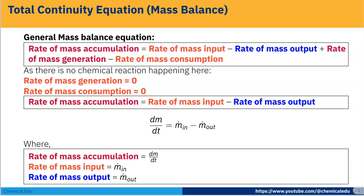First we write the general mass balance equation. Rate of mass accumulation equals rate of mass input minus rate of mass output plus rate of mass generation minus rate of mass consumption. As there is no chemical reaction happening, rate of mass generation and consumption are zero. Therefore, rate of accumulation dm/dt equals ṁ_in minus ṁ_out.